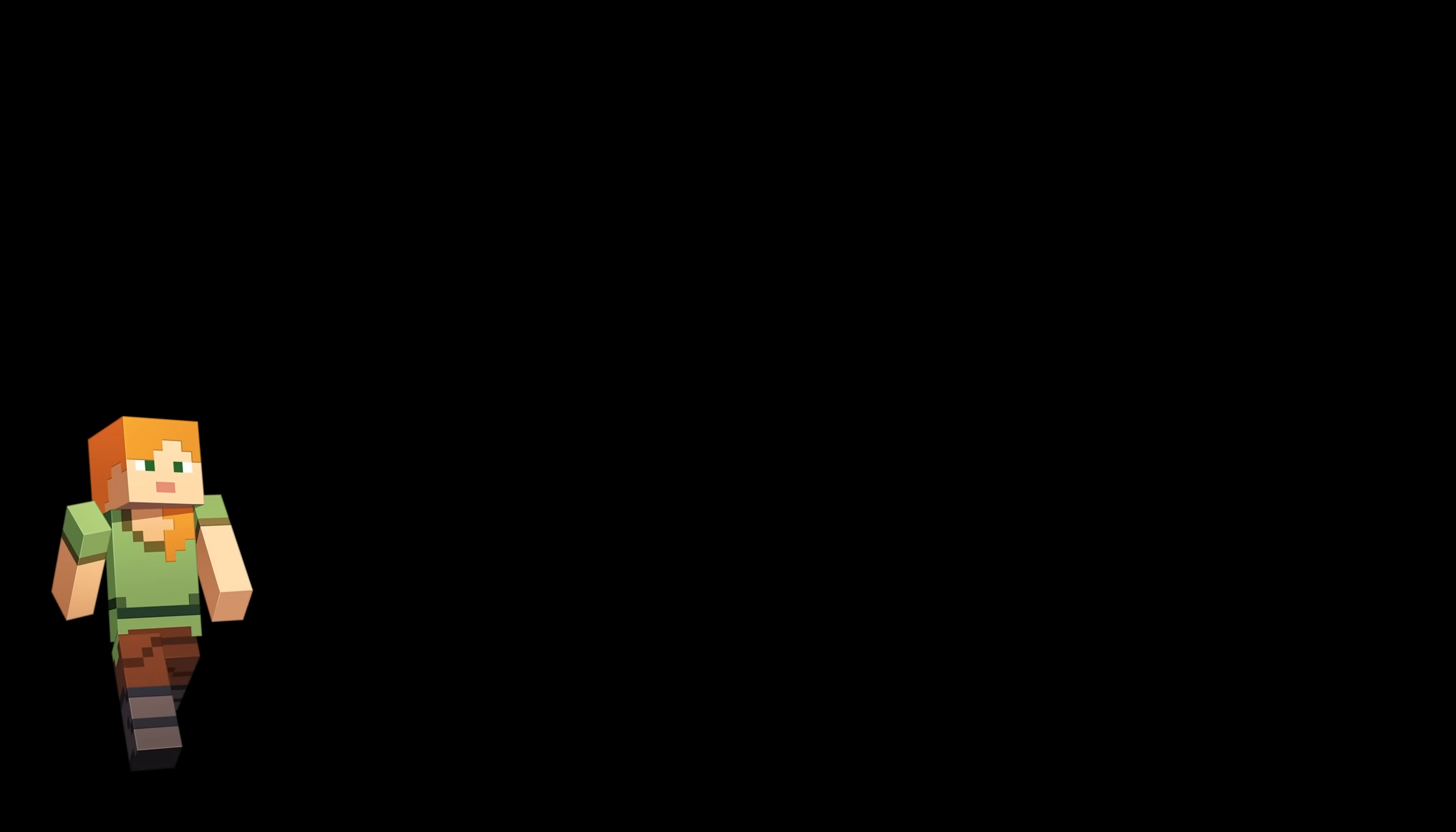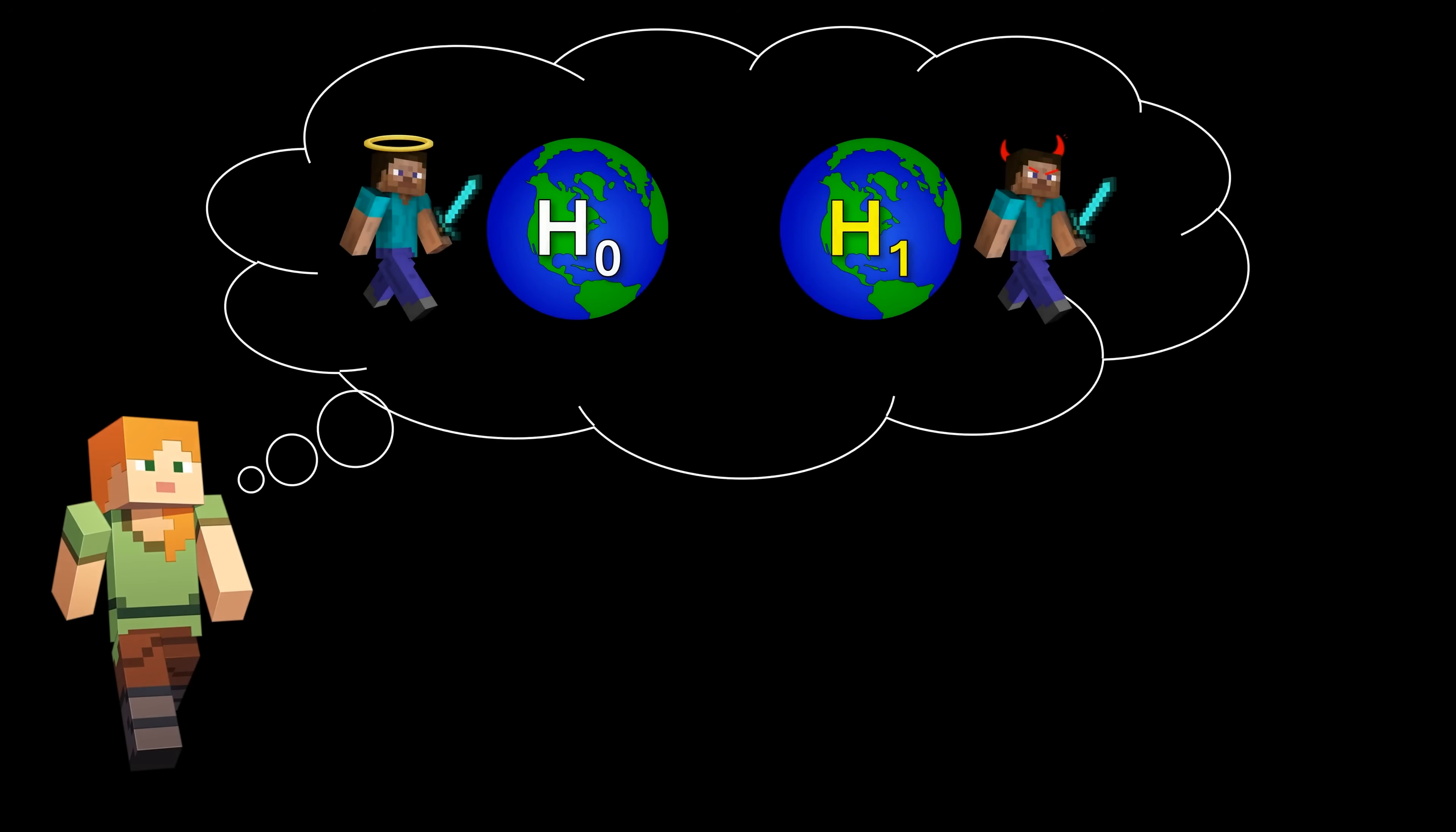As said before, you can think of the null and alternative hypotheses as two different worlds that we might be living in, one in which our friend did not cheat and got lucky, and one in which they did cheat by modifying the probability of getting a blaze rod.